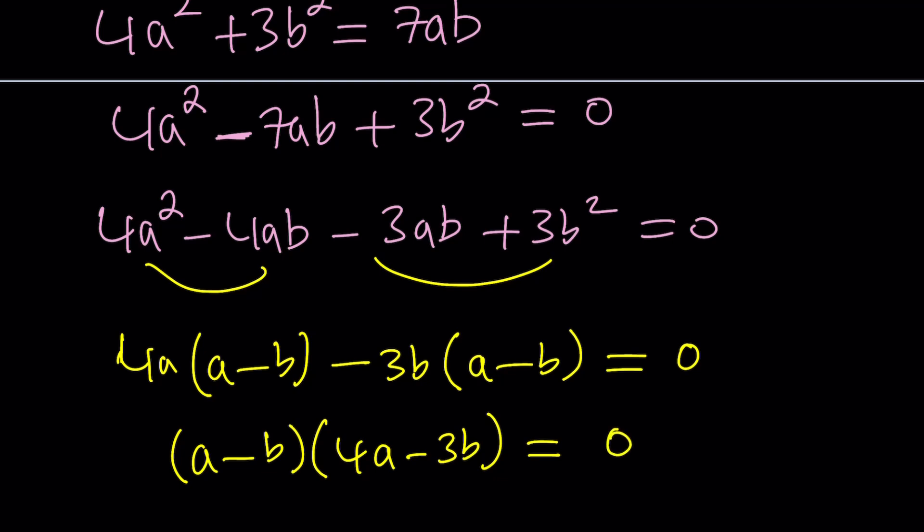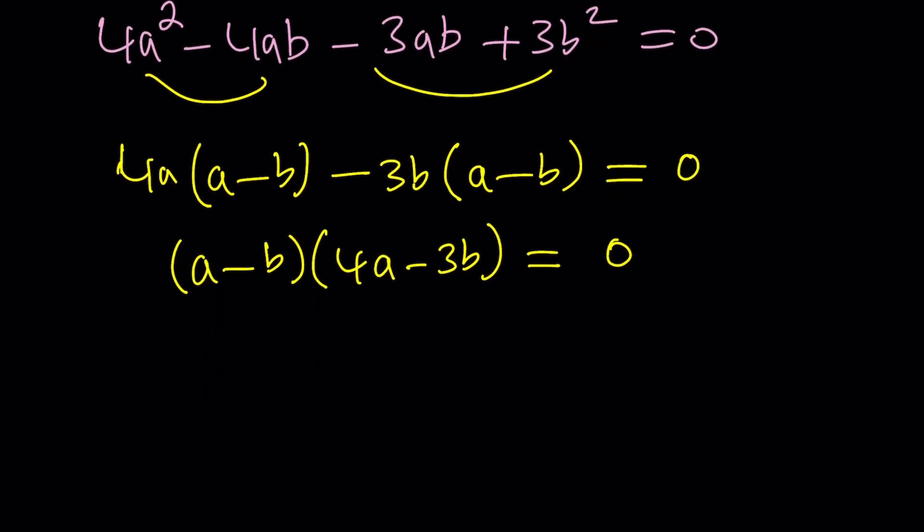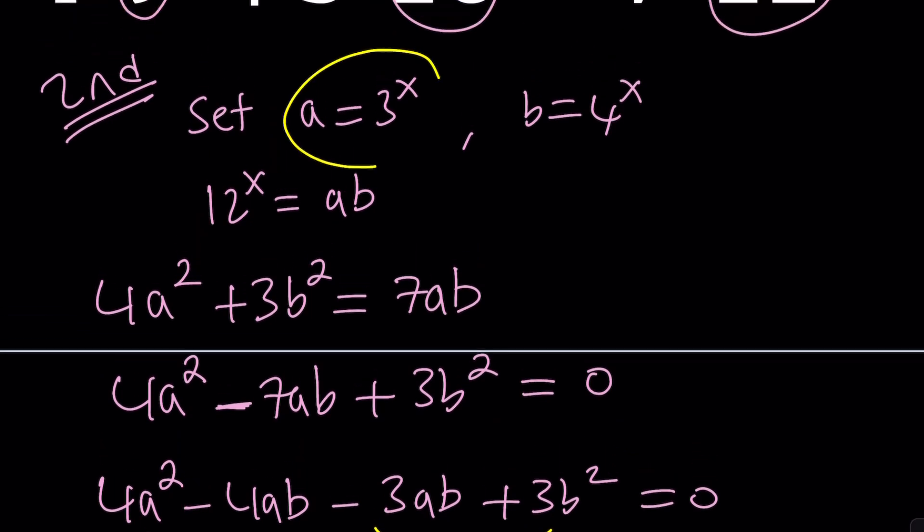As you know, this gives us two solutions. So you can basically write this as a minus b equals 0, which means a is equal to b. Or 4a minus 3b equals 0 or 4a equals 3b. Okay. Now, where do we go from here? Now, let's go ahead and back substitute.